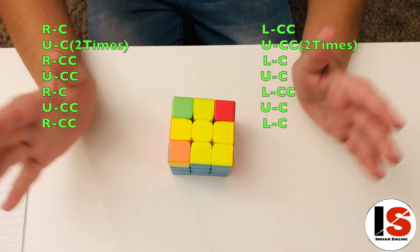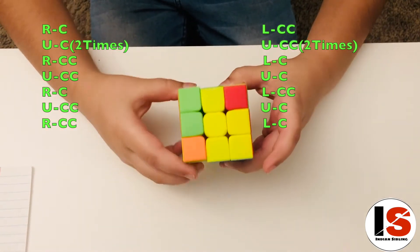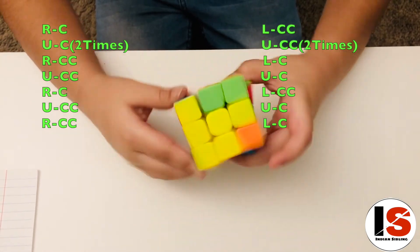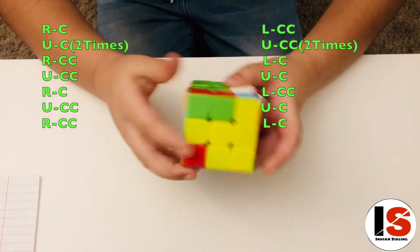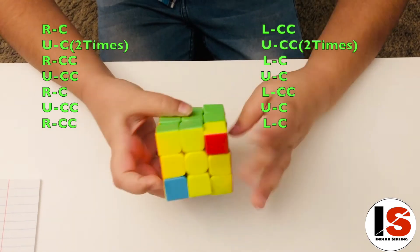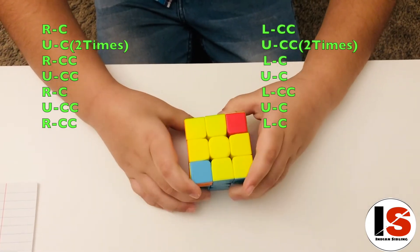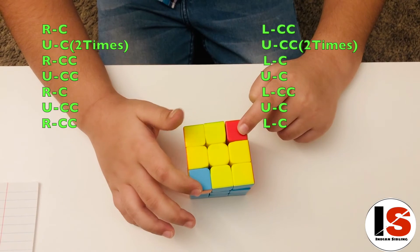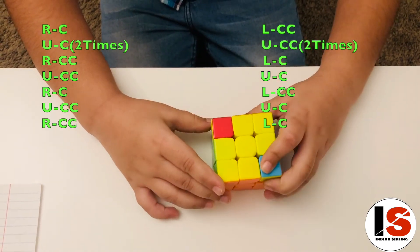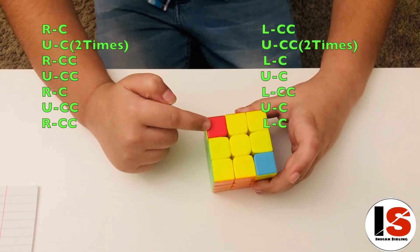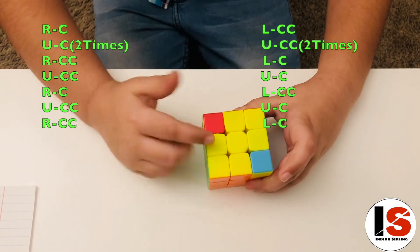As you can see, now I have one over here and one over there. I would keep this this way, so one of my unsolved pieces would be on the right.